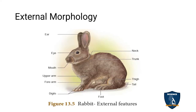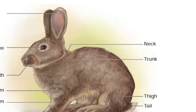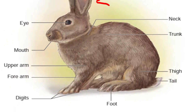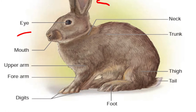Now we look at the external morphology of a rabbit. You can see the head region, neck region, and trunk. The tail is here, and this region is the foot or digital region. Here is the forearm and the hind limb. The upper arm, mouth, and eyes are also visible on the rabbit.